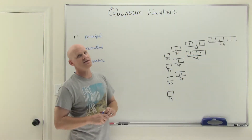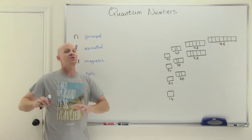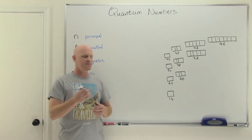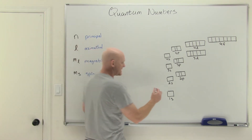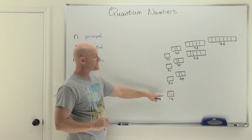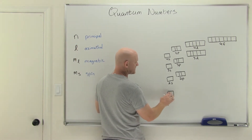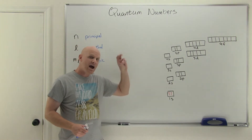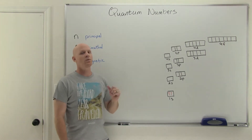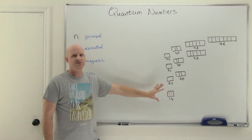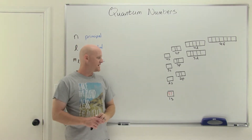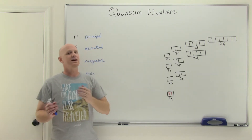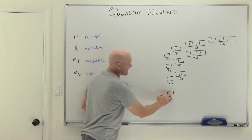You get a set of four quantum numbers for every electron in an atom, and they're always going to be different. The Pauli exclusion principle says that no two electrons in an atom will have the same four quantum numbers. If you put two electrons in the same orbital with the same spin, they'd have the same address in the atom — the same orbital with the same spin — which is impossible. You cannot have two electrons in the same orbital with the same spin; that's a violation of the Pauli exclusion principle.